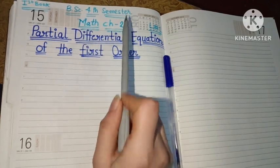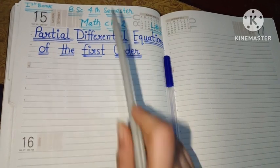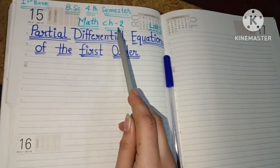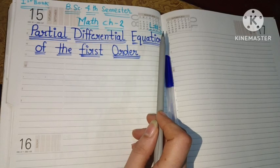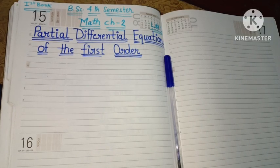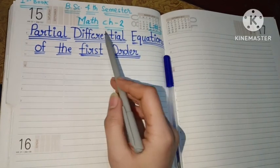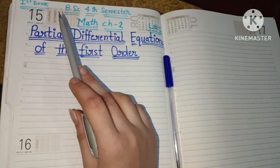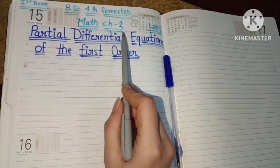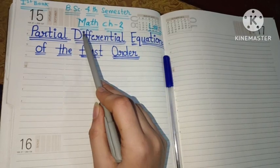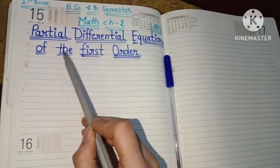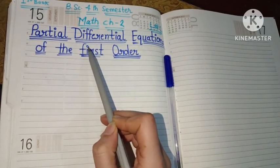There are two books in BSc fourth semester maths. The first chapter is completed — if you want to see my previous lectures, the link is in the description. Today we are going to study the first book, chapter number two, which is Differential Equations — specifically lecture number one.